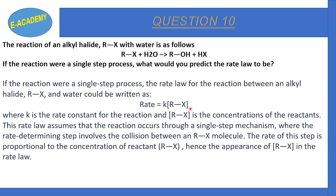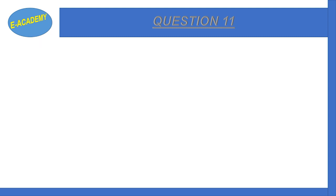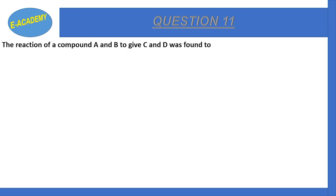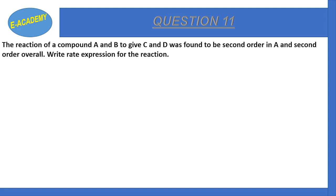Question number 11: The reaction of compound A and B to give C and D was found to be second order in A and second order overall. We have reactants A and B forming products C and D, and our reaction is second order with respect to A, and the overall order is second order.